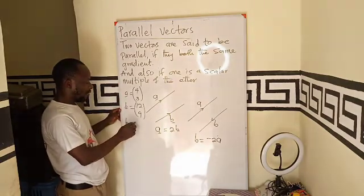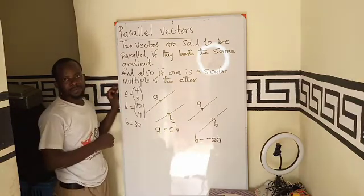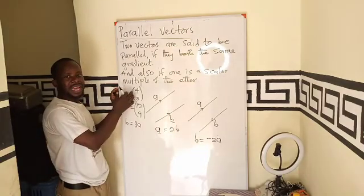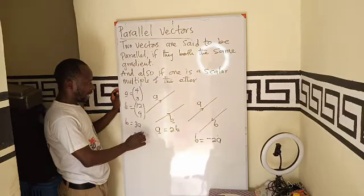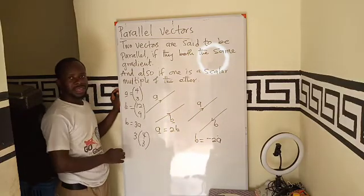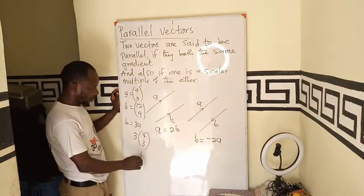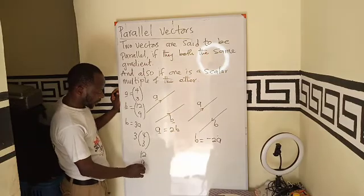So it means that B is actually 3 times what? So if I multiply the vector A by 3, as in 3 multiplied (4, 3), the answer I will get will become (12, 9).